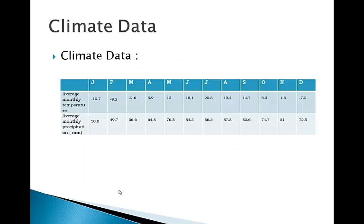This is a data table. This is what geographers and climatologists use to construct climate graphs. Notice that in your climate data table you are given two main pieces of information: average monthly temperature for each month of the year, and average monthly precipitation for each month of the year.